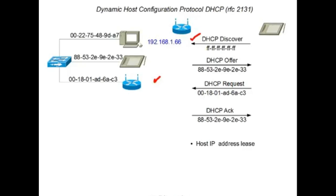Now the tablet has an IP address. The address is leased to the tablet — it's not a permanent assignment, but rather on loan for a certain time to live. When that time to live starts to expire, the tablet can send another request to renew the lease on that IP address. This is done because tablets, PCs, or any kind of host that gets a dynamic address may be disconnected from the network, and that address would be stranded without a lease and renewal mechanism.